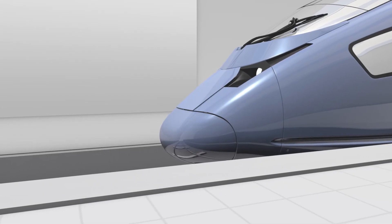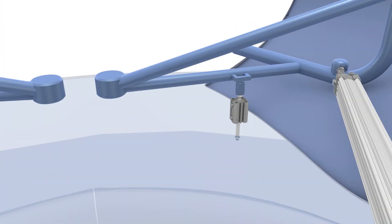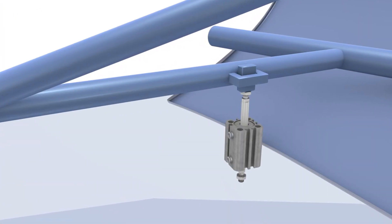High-speed trains use aerodynamic fronts to reduce air resistance. Nose cones are pneumatically operated and locked with cylinders.